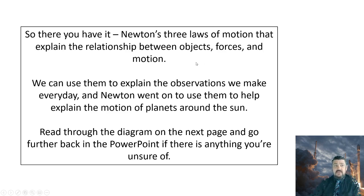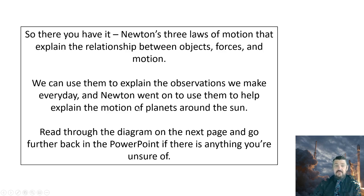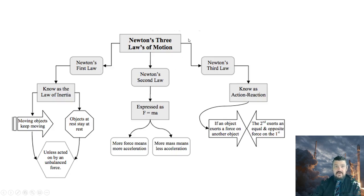So there you have it — that is Newton's three laws of motion. They explain the relationship between objects, forces and motion. They are not complicated; you see them every single day. Newton used them to help explain the motion of the planets around the sun, which back in those days was hugely controversial because we thought the Earth was the centre of the universe. Here's our flowchart: Newton's first law — inertia; Newton's second — force equals mass times acceleration; Newton's third — action and reaction. The old phrase 'for every action there is an equal and opposite reaction' is where that phrase comes from.